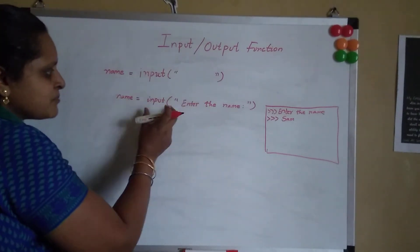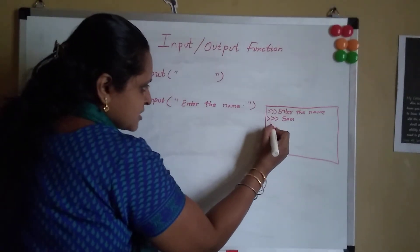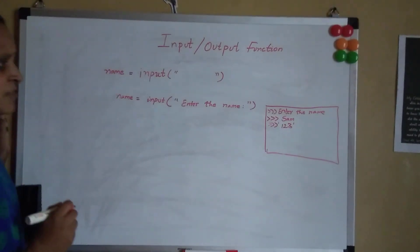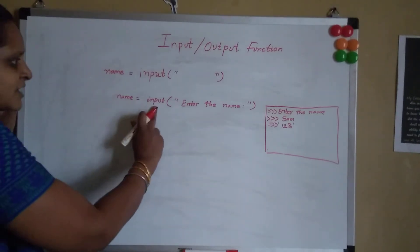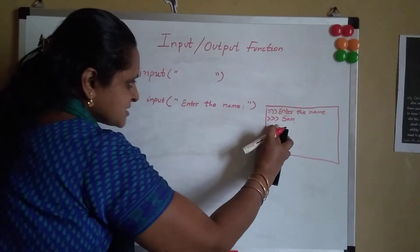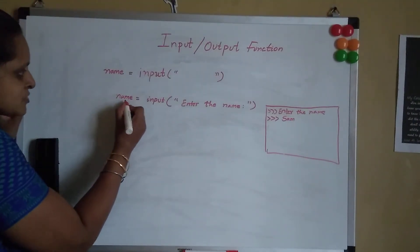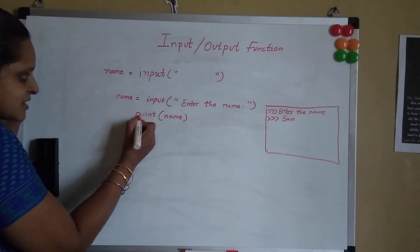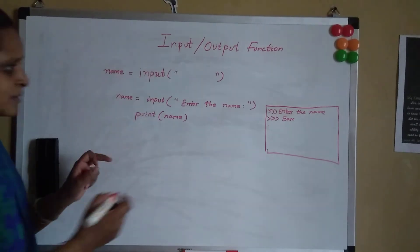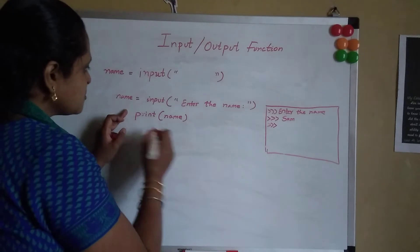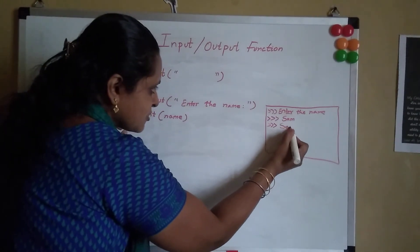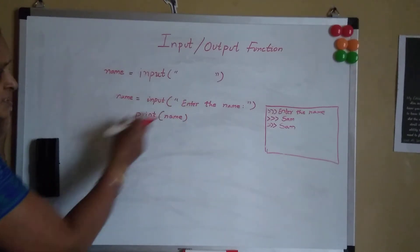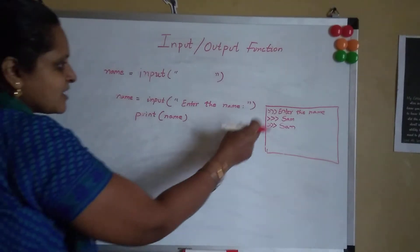Any data which the user enters will be present in string format. If the user enters 123, even this will be stored as the string '123'. So whatever value the user enters, it will be in string format. Now if I want to see what value is present in name, I say print(name) — this is the output function — and SAM would be printed on the screen.